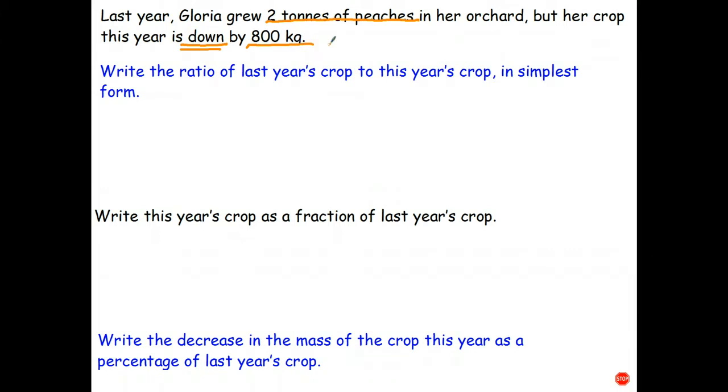Last year Gloria grew 2 tons of peaches in her orchard, but her crop this year is down by 800 kilograms. So it's down by 800, this year's crop isn't 800 kilograms. It's gone down from 2 tons. Write the ratio of last year's crop to this year's crop in simplest form. Let's go ahead and convert those two tons to kilograms. We multiply by a thousand, so that's 2000 kilograms. The crop is down by 800, so therefore this year's crop is 1200 kilograms.